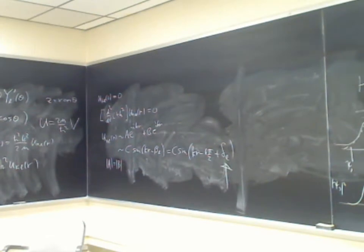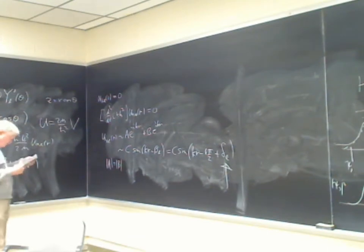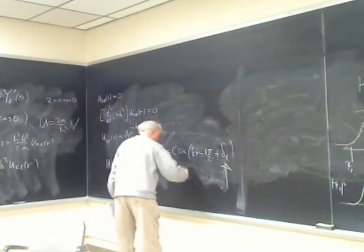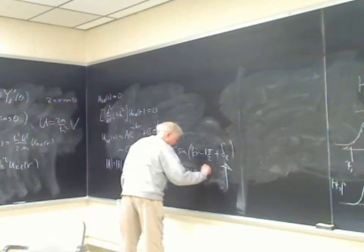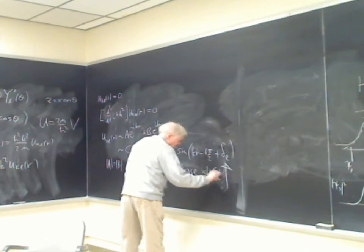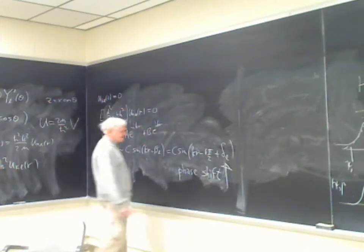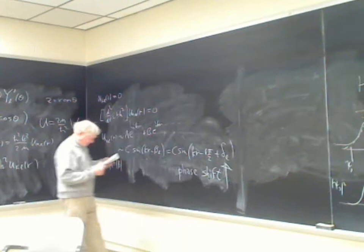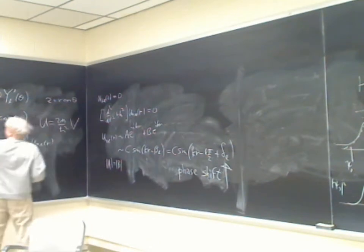At large distances, e^{ikz} looks like a sum of partial waves. The full partial wave with scattering looks exactly like the free partial wave except for a factor of e^{2iδ_l}. This quantity δ_l is called the phase shift — the reason is that it represents a shift in the phase of the plane wave when scattering occurs.